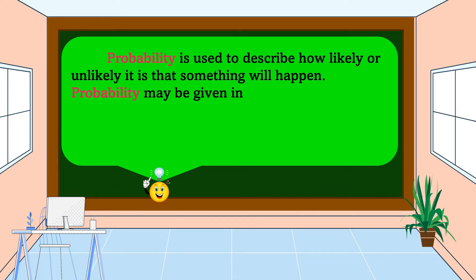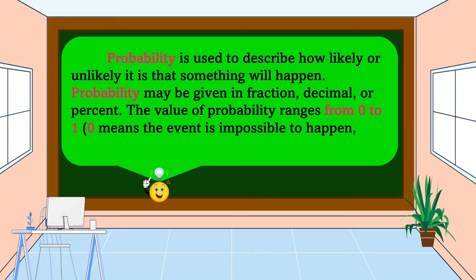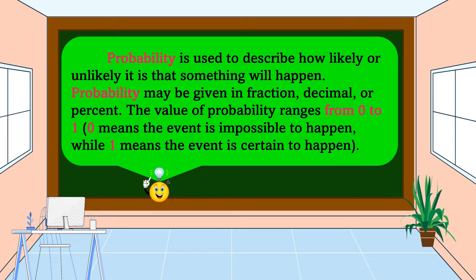Probability may be given in fraction, decimal, or percent. The value of probability ranges from zero to one. Zero means the event is impossible to happen, while one means the event is certain to happen.